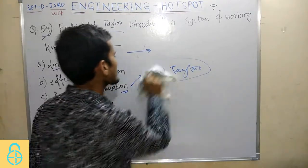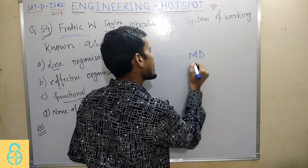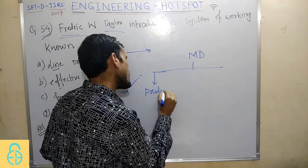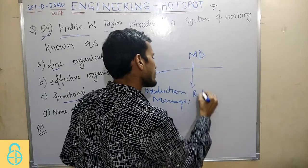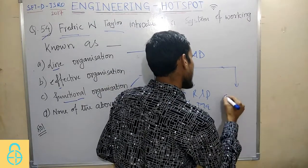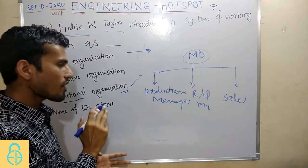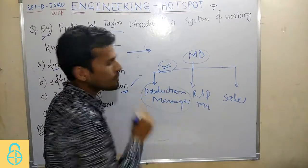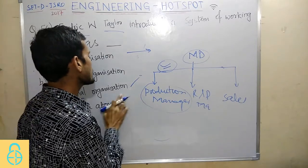In Functional Organization, at the top we have an MD (Managing Director). Under the MD, we have managers organized according to their function — for example, a Production Manager, an R&D Manager, and a Sales Manager. Each manager has a certain responsibility within their function. This type of organization does not follow a top-to-bottom approach like Line Organization.